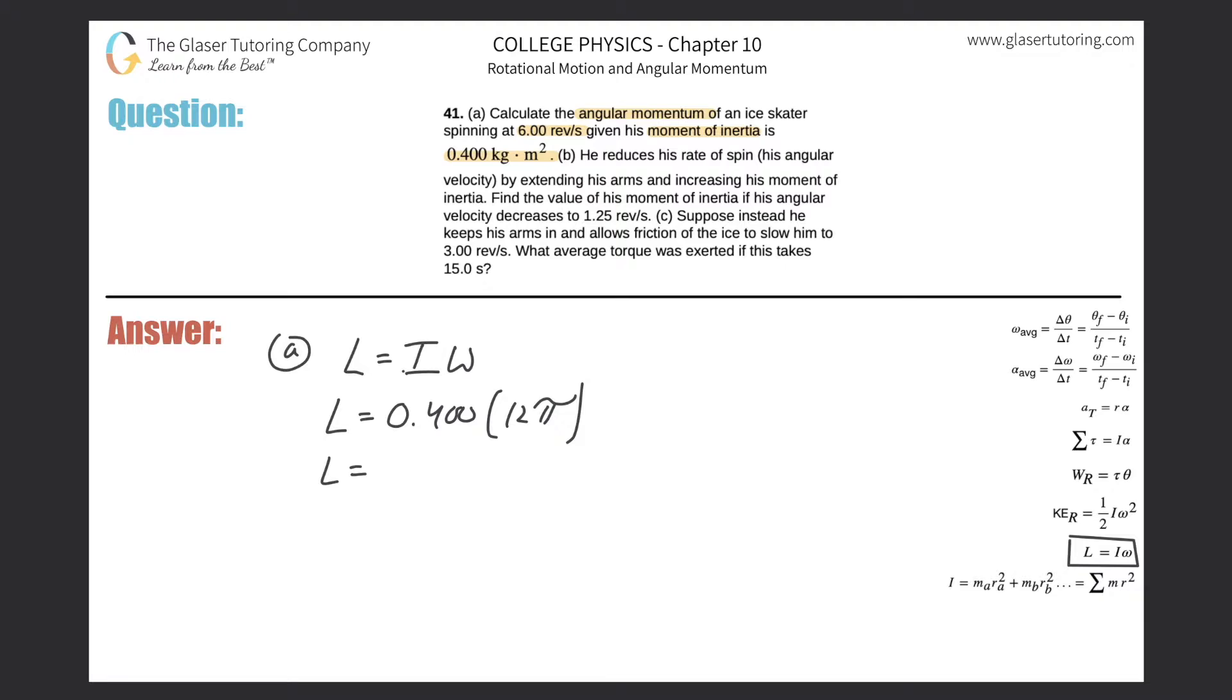And now it's just simply multiply this out. So 0.4 times 12 times π. And it works out to be about 15.1 kilogram meter squared per second. Great. So that takes care of letter A.